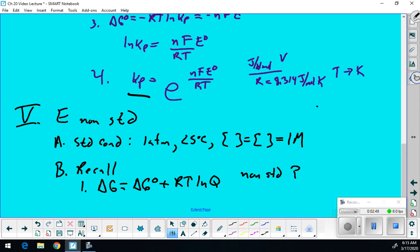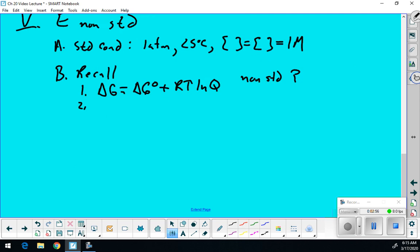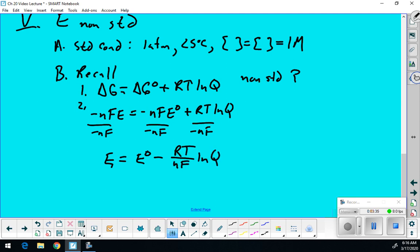So then let's go ahead and make the substitution for my E. We said that delta G is equal to negative nFE. So that would mean delta G prime is negative nFE prime plus RT natural log of Q. So let's divide everything by minus nF. And so that means my E is equal to my E prime minus RT over nF natural log of Q.